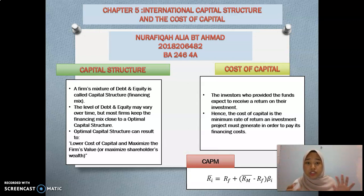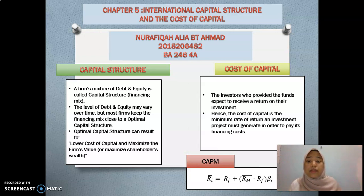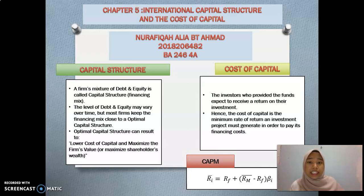First, what is Capital Structure? Capital Structure is a firm's mixture of debt and equity and it's called a financing mix. The level of debt and equity may vary over time but most firms keep the financing mix close to an optimal capital structure.